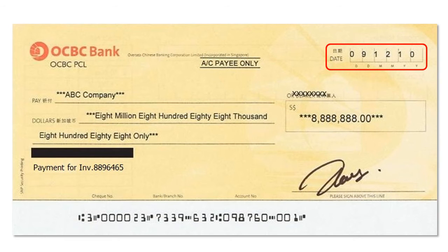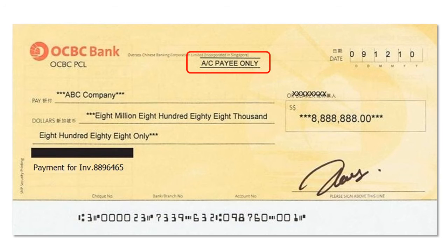The system also has no problem if you would like to issue a post-dated check. By default, the system will also print out account payee only and strike off the word bearer. This will help you improve the security of the check. And if you have a need to issue a cash check, no problem — it is just a click away.